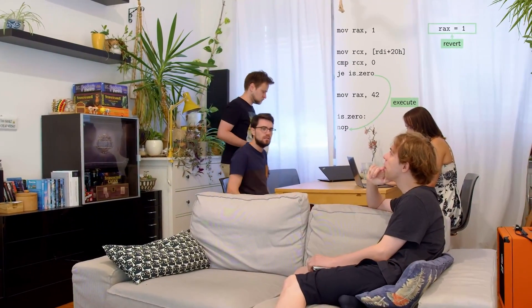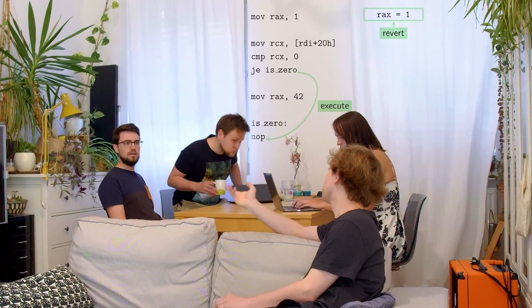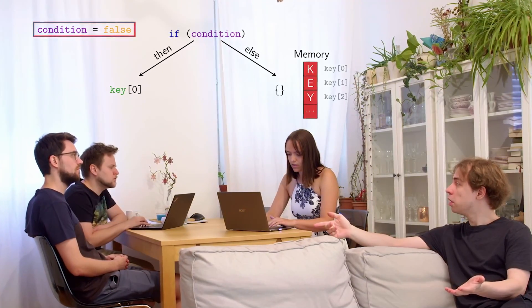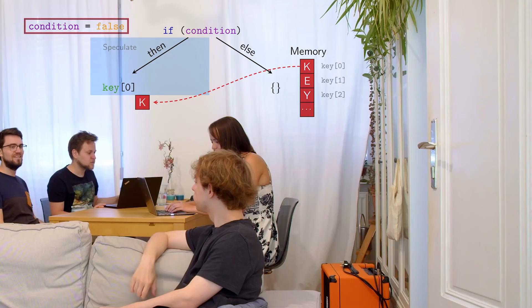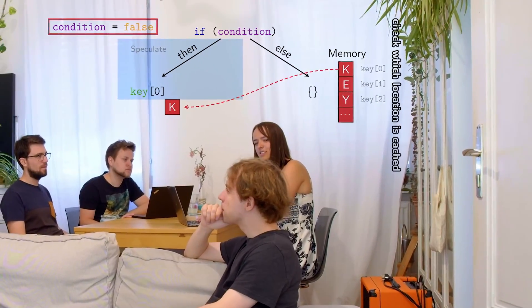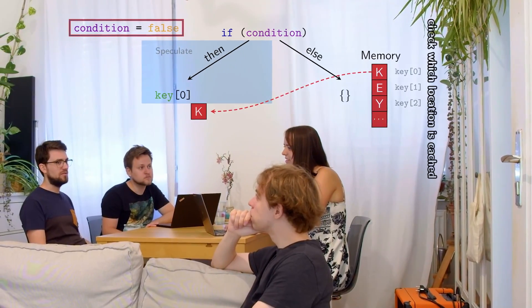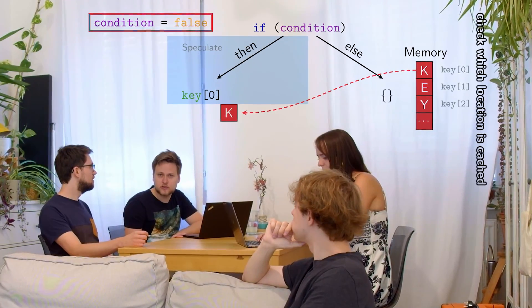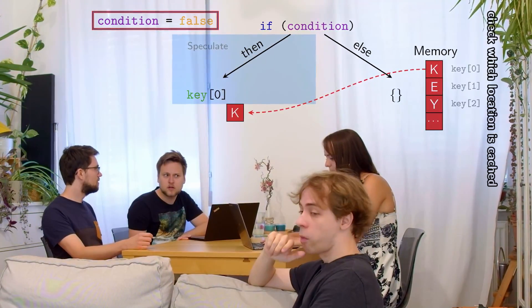So basically you prime the branch predictor, and then some other process that has a branch on a congruent address will see mispredictions. But how is that dangerous? It's all speculative execution, fully reverted, right? Yeah, that's right. But there's side channels like the cache. So you want to use a cache side channel here? Yeah, you could during speculation access some memory location and it would be loaded into the cache. Nice idea. After speculation you check which location is cached. But you forgot one thing: the victim has to do that.